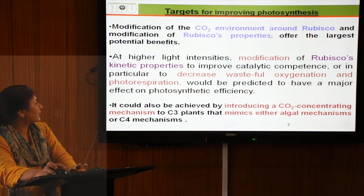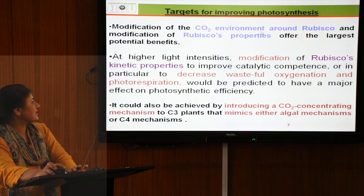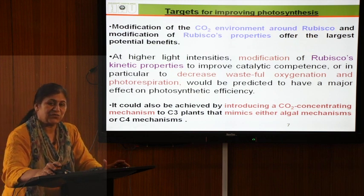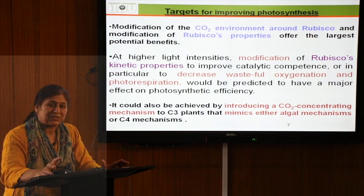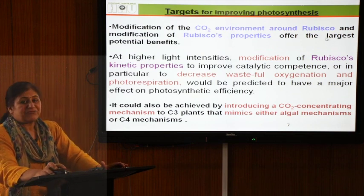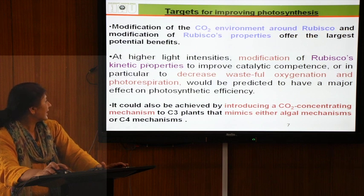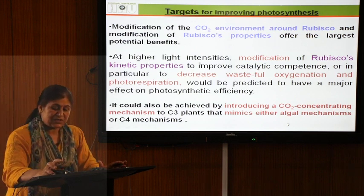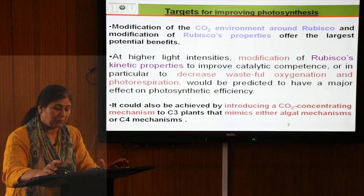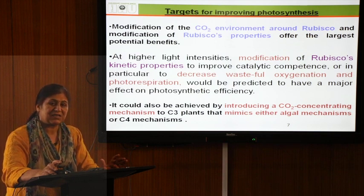What are the targets where photosynthesis can be improved? The first important target is the modification of the carbon dioxide environment around rubisco — this is what C4 plants already do. As scientists, we can modify rubisco's properties so the photosynthetic process is enhanced even under the abrupt environmental changes we see in Hissar, where temperatures fluctuate to extremes on both sides.